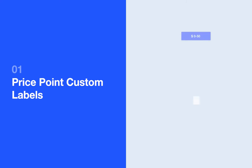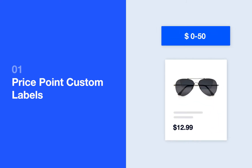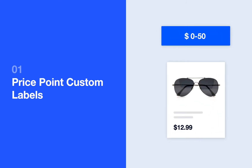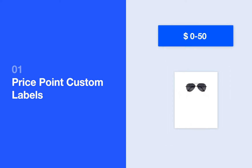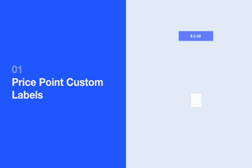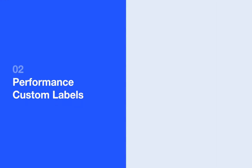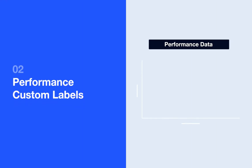Price buckets allow you to separate your products by their price range. For example, a product that costs $12.99 would fall into the price range of $0 to $50. This label can be especially useful when there are large variations in prices within a single brand or product type. Typically, one can decide on the cutoff points for poor, good, and best performers based off of Google Ad metrics.